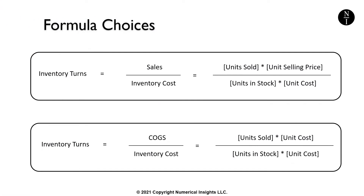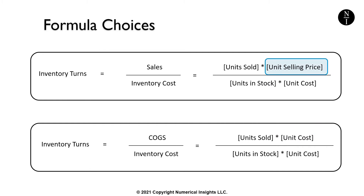How do we calculate inventory turns? There are two formulas. In both cases, the values put into these formulas are in dollars, euros, pounds, or whatever the base currency is for your company. The difference between these two formulas is that the first one, since it contains sales, has a price component built in. The second formula does not relate in any way to price. The finance department tends to like the first formula, whereas supply chain professionals like the second formula.